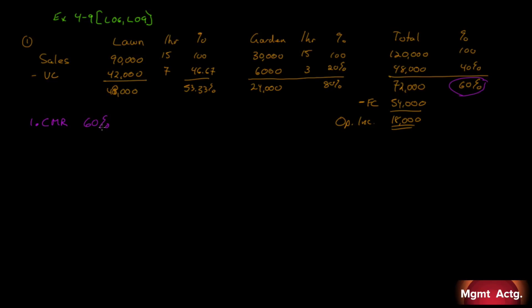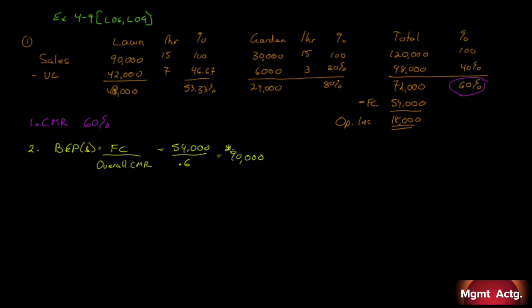Part two: compute the overall break-even point for the company in sales dollars. Since we're calculating in sales dollars, we divide by the ratio. Break-even in dollars equals fixed costs divided by the overall contribution margin ratio — that's why we needed part one. Fixed costs are $54,000 divided by 0.6, which gives us $90,000.